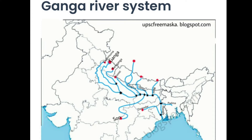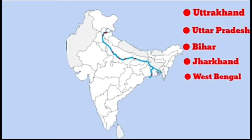The Ganga is joined by many tributaries — these are Yamuna, Gandak, Ghagra, Kosi, etc. The mainstream of the Ganga flows into Bangladesh, where it is joined by the Brahmaputra. Further downstream, it is known as the Meghna. This river flows into the Bay of Bengal and forms the Sundarbans Delta.